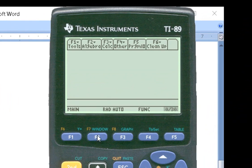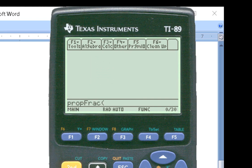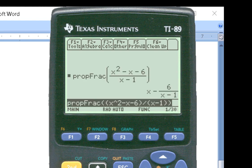So hit F2 and we hit number 7, and that's proper fraction. So you have something where the degree of the numerator is larger than the degree of the denominator and you want to anticipate or do the division, use this command and then write it out. So here I get x squared minus x minus 6, divided by x minus 1, close the main parentheses.